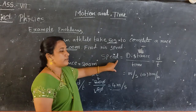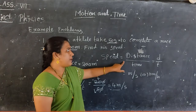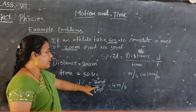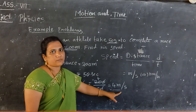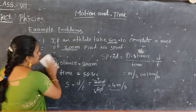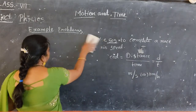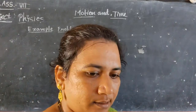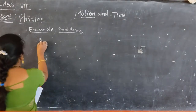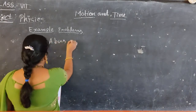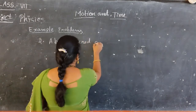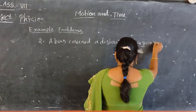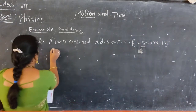First you have to learn the definition of speed and then the formula of speed. Speed is equal to distance by time. By introducing values into this formula, we can get the speed of the athlete as 4 meters per second. Now let's go to the second problem. The second problem: a bus covered a distance of 480 kilometers in 8 hours.